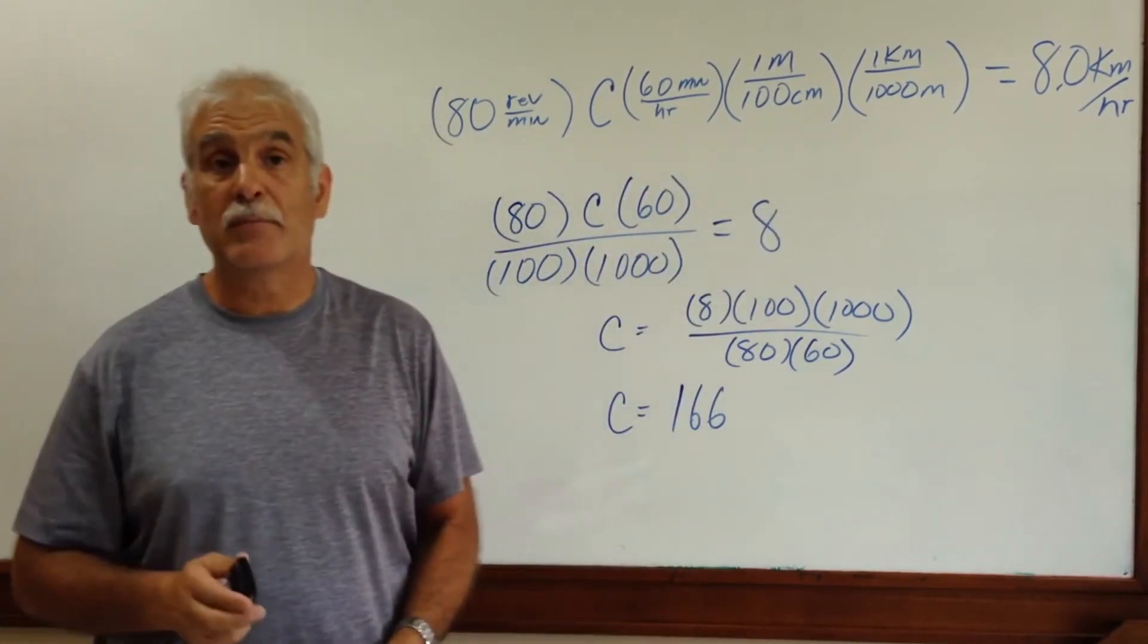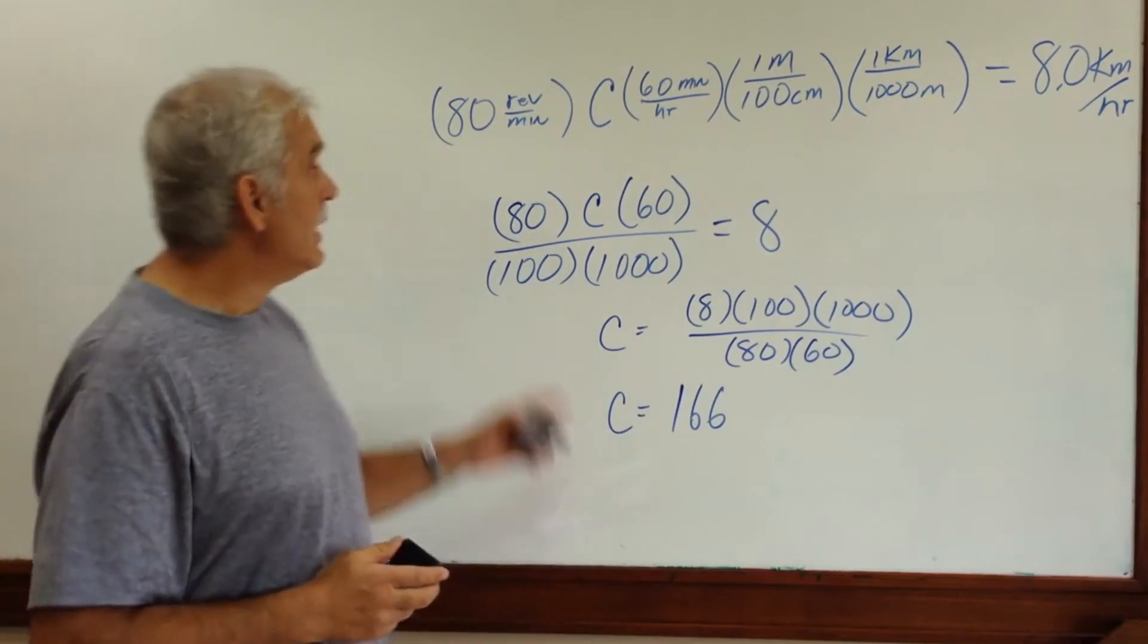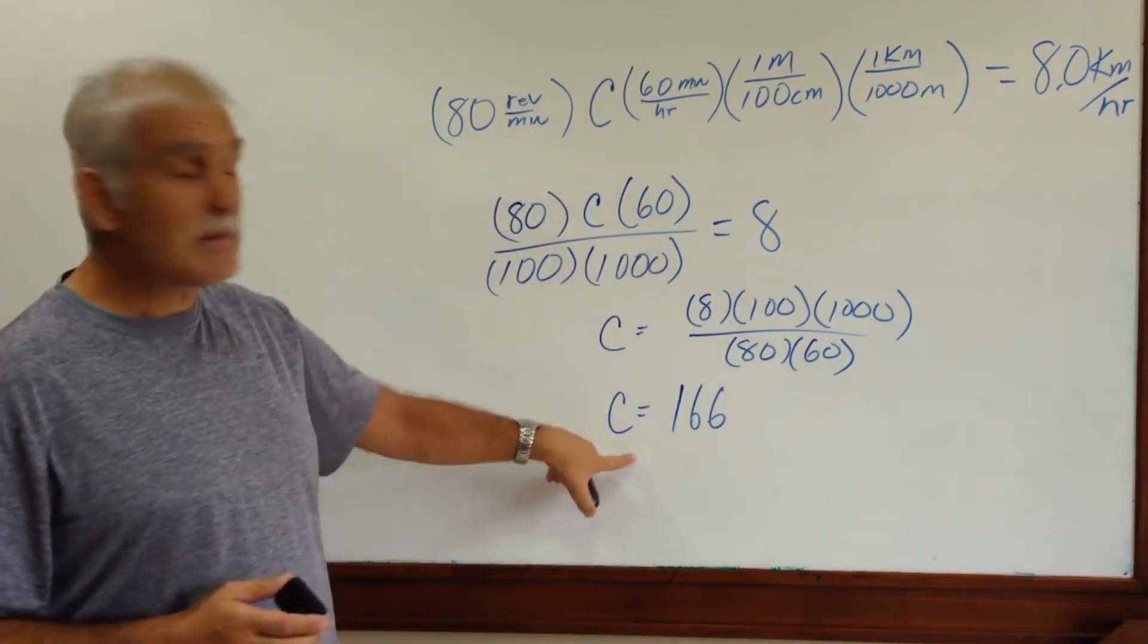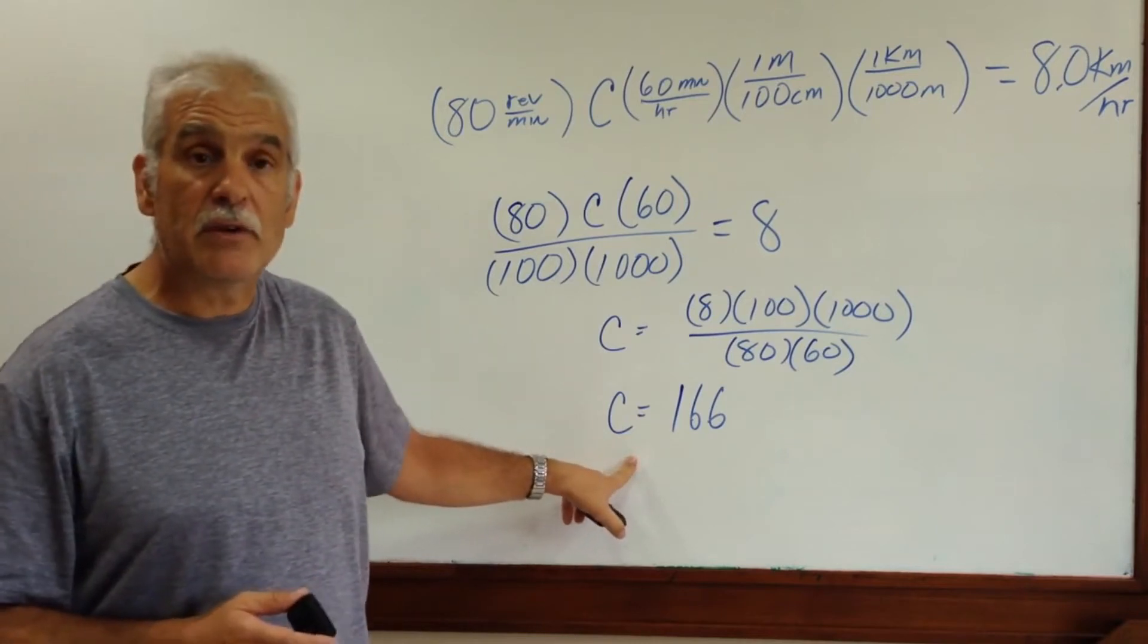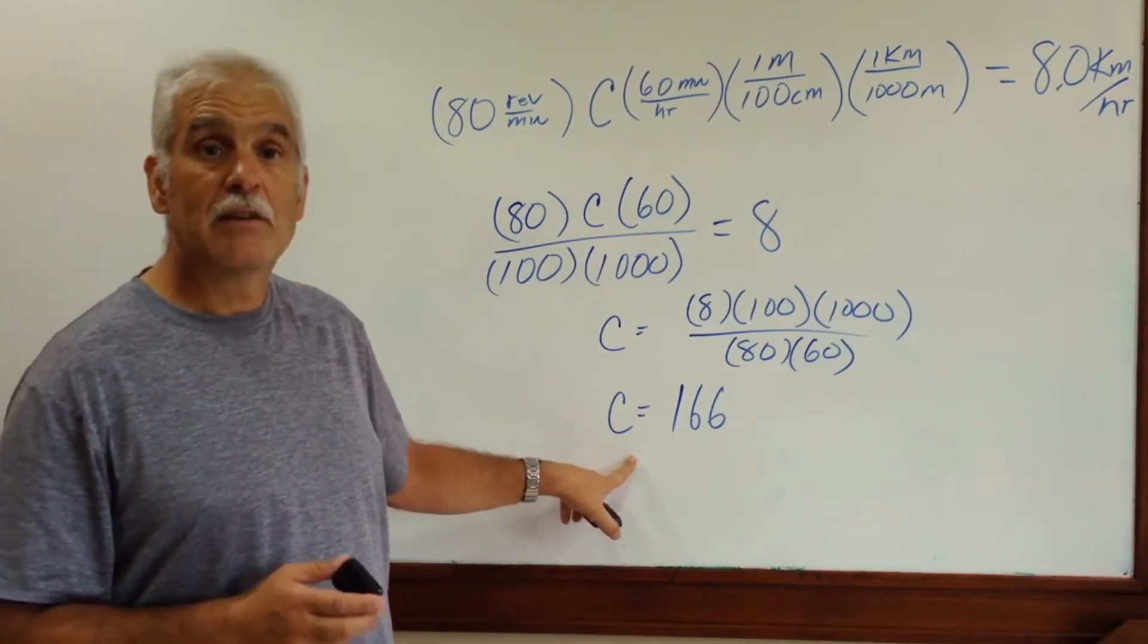That's the number that's going to come up on our bike odometer. I'm going to do the math, and I'm going to calculate a circumference of 166 centimeters.